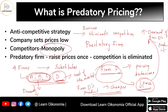Firm D drives away all competitors A, B, and C through its price reduction behavior. Once competition is completely eliminated, firm D will definitely raise the price of the commodity, once it identifies that A, B, and C are no longer in the market.